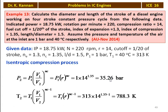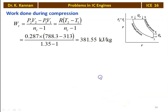For the polytropic compression process: P2 = P1 × R^NC = 1 × 14^1.35 = 35.26 bar. T2 = T1 × (V1/V2)^(NC−1) = 313 × 14^(1.35−1) = 788.3 K. Work of compression = R × (T2 − T1) / (NC − 1) = 0.287 × (788.3 − 313) / (1.35 − 1) = 381.55 kJ/kg.